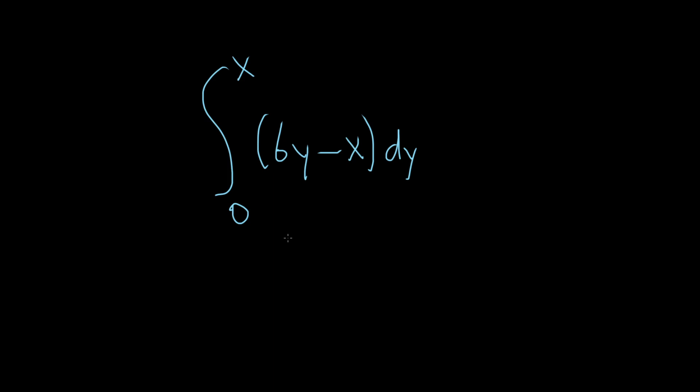Hi everyone, in this problem we're going to integrate 6y minus x with respect to y. We have two variables, even though it's a single integral, we have an x and a y, so we just have to be a little bit more careful.